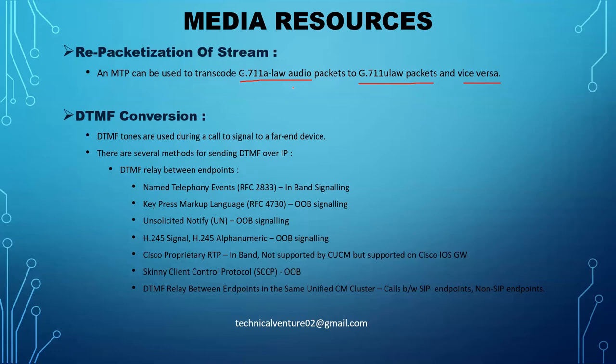Transcoder and MTP are kind of the same thing, but if you are using software MTP, the work is only G.711 A-law to G.711 mu-law and vice versa. If we talk about the work for a transcoder, it can convert any codec — G.711 to G.722, G.723, G.729AB, G.729A — everything.